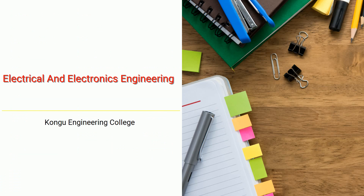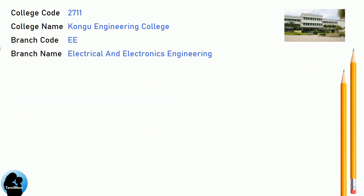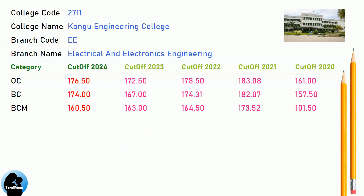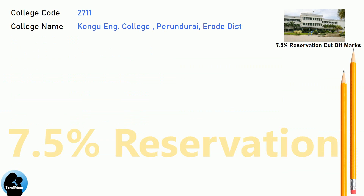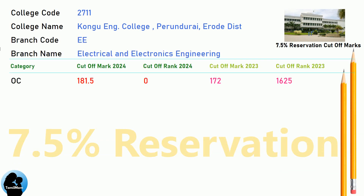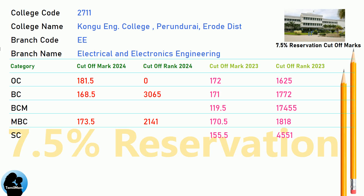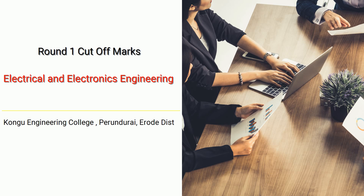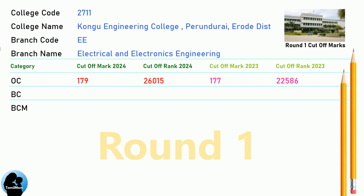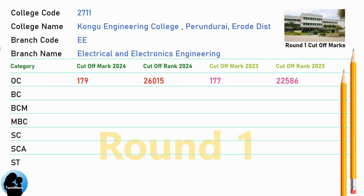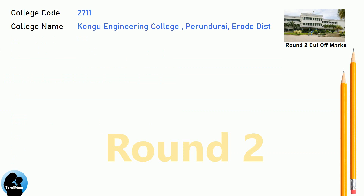DNA cutoff for Kongu Engineering College in Electrical and Electronics Engineering. DNA 7.5 reservation cutoff, Round 1 cutoff, and Round 2 cutoff for Kongu Engineering College in Electrical and Electronics Engineering.